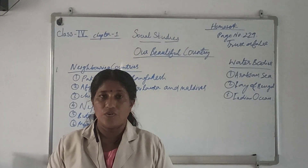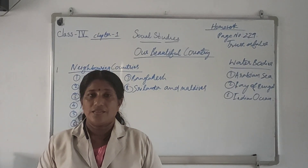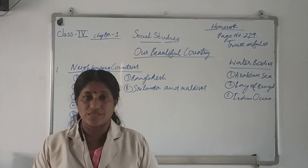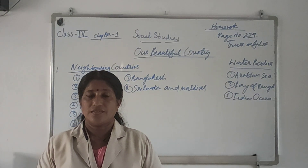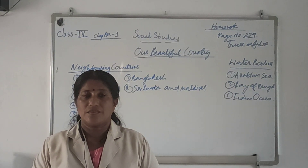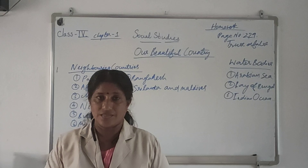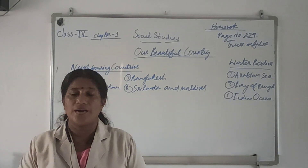India is a land of vast plains, extensive plateaus, high mountains, islands, coastal plains, and deserts. I am going to start the first chapter of social studies.